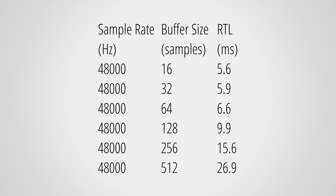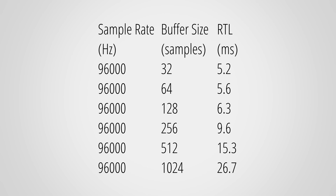Lastly let's check out the roundtrip latency, which should be as low as possible to not perceive any delay when using an amp sim. Here are the times with 48 kHz and different buffer sizes — these times are decent and correctly reported by the driver, but they are 1–2 ms longer than better performing interfaces in this price range. With a sample rate of 96 kHz the results look pretty much the same.